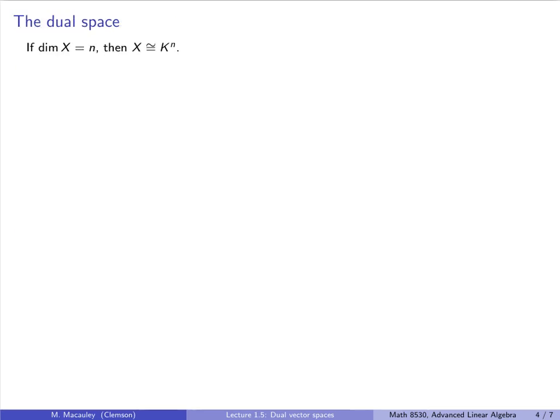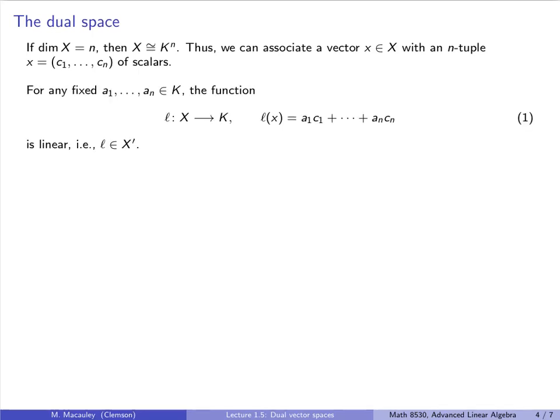Recall that if X is n-dimensional, then X is isomorphic to K^n. In other words, we can associate a vector x with an n-tuple of scalars. Let's say c1 up to cn. Now, if we have any other fixed n scalars, a1 up to an, then this defines a linear scalar function as follows. L of x is just a1c1 plus all the way up to an cn. What we are really doing is taking the dot product of, say, this vector with our vector c.